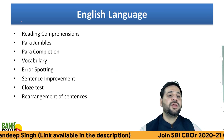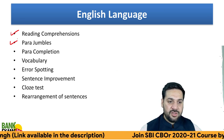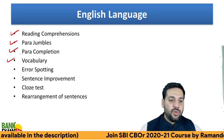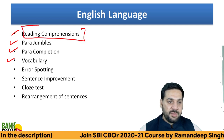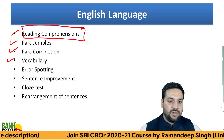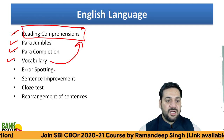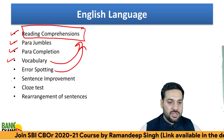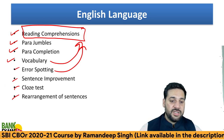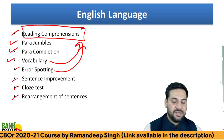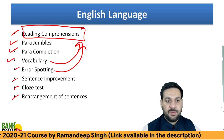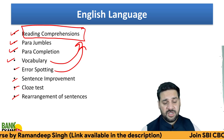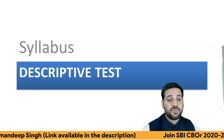For English language: reading comprehension, para jumbles, para compilation, and vocabulary. A majority of the marks will be from reading comprehension and vocabulary, and error spotting will be part of the reading comprehension section. Cloze test, sentence improvement, and rearrangement of sentences will also be part of the syllabus, with around four to six marks from each of these topics.